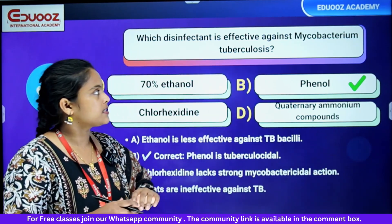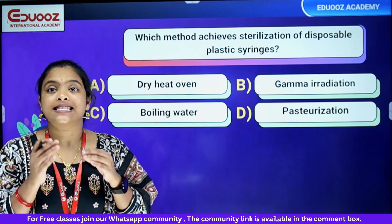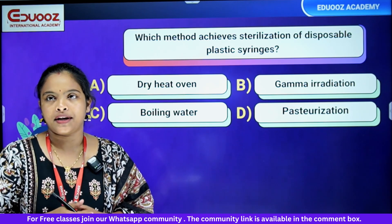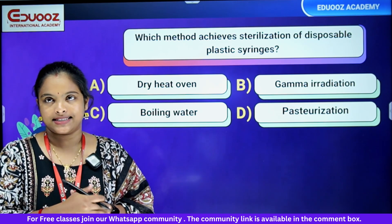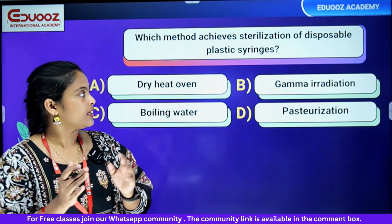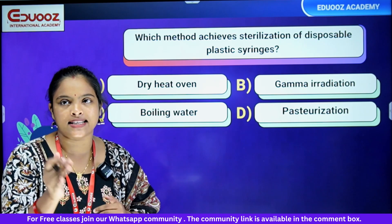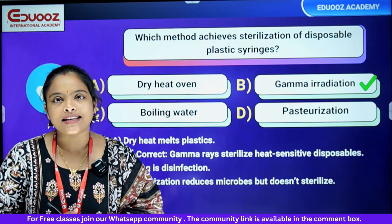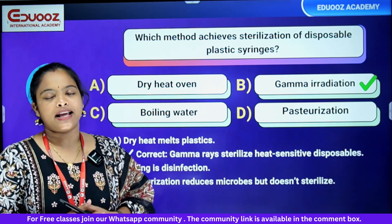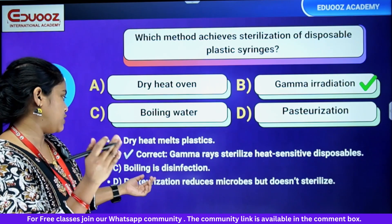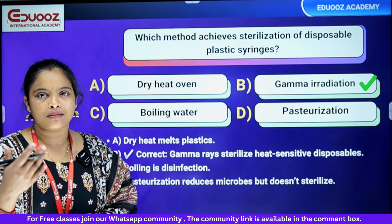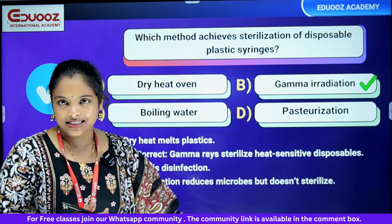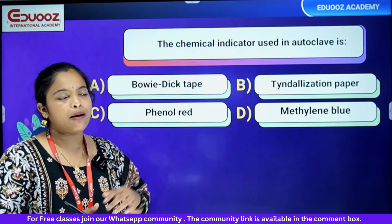Next question: which method achieves sterilization of disposable plastic syringes? Options: dry heat oven, gamma radiation, boiling water, pasteurization. The answer is gamma radiation. Gamma radiation sterilizes heat-sensitive disposable items. Boiling is only disinfection, dry heat is unsuitable, and pasteurization reduces microbes but doesn't sterilize.